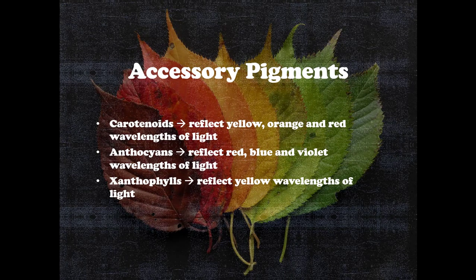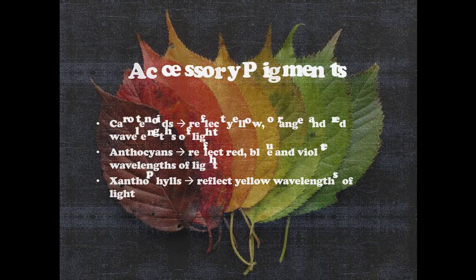Here are some of the accessory pigments that are rather common: carotenoids reflect yellow, orange, and red wavelengths of light; anthocyanins reflect red, blue, and violet wavelengths of light; and xanthophylls will reflect yellow wavelengths of light.